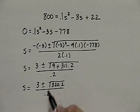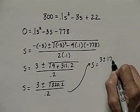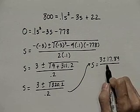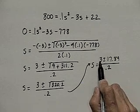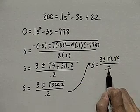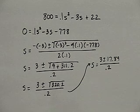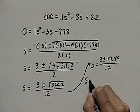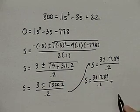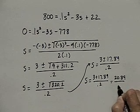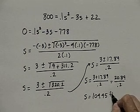Again, using a calculator, we need to approximate the square root of 320.2. If you do so, you'll see that that's 17.89, and so I have 3 plus or minus 17.89 divided by 0.2. There are two answers here, but only one of them makes sense for the problem. I have 3 plus the square root of 17.89 divided by 0.2, and 3 minus the square root of 17.89 divided by 0.2. 3 minus 17.89 is going to be negative, so that answer doesn't make sense. The answer we need is 3 plus 17.89 divided by 0.2, which is 20.89 divided by 0.2. And if you do that division, this number is 104.45 feet per second.